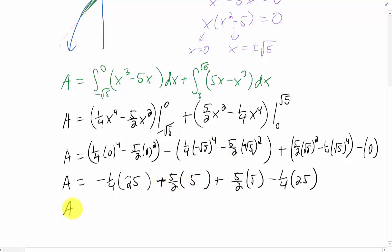We have a couple of negative 25 fourths terms, and a couple of 25 halves terms. We can handle this in a lot of different ways. We could combine these two fourths terms into negative 50 fourths, and the two halves terms into positive 50 halves.